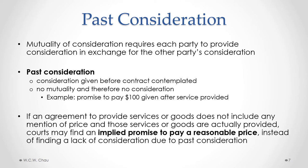An exception to that treatment is where an agreement to provide services or goods does not include any mention of price, and those services or goods are actually provided. The court may find an implied promise to pay a reasonable price, instead of finding a lack of consideration due to past consideration. So if my neighbor agreed to mow my lawn and we didn't talk about a price — there was no mention of it being a favor — and then my neighbor goes ahead and mows my lawn and then asks for payment, a court could interpret that as an implied promise on my part to pay a reasonable price, even though we did not discuss or negotiate a specific price.